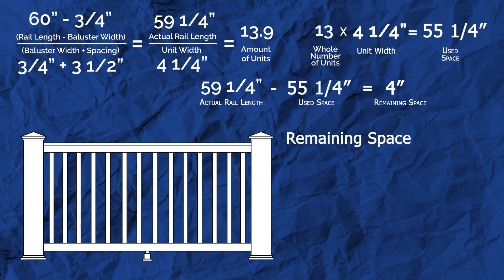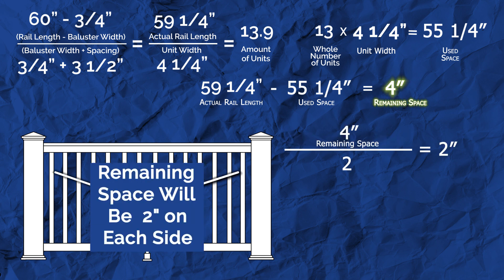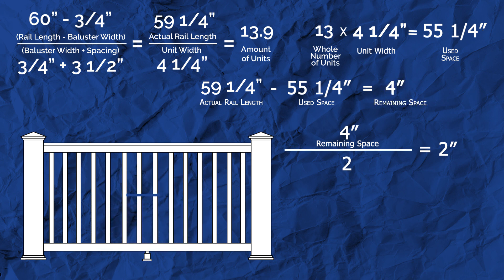You'll divide the remaining space amount by two to find that distance. In our example, we have a remaining space of four inches, which divided by two equals two inches between our posts and their nearest baluster.